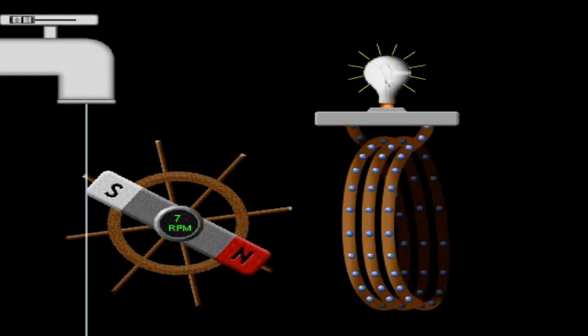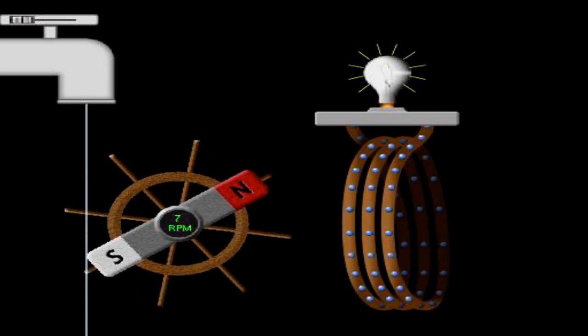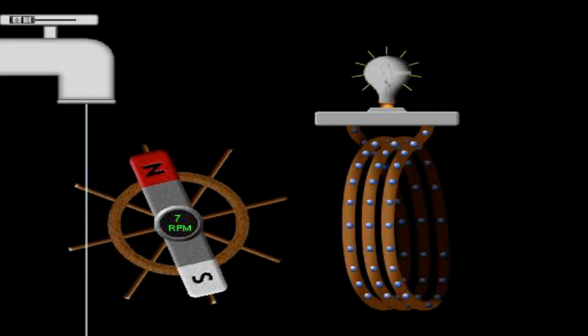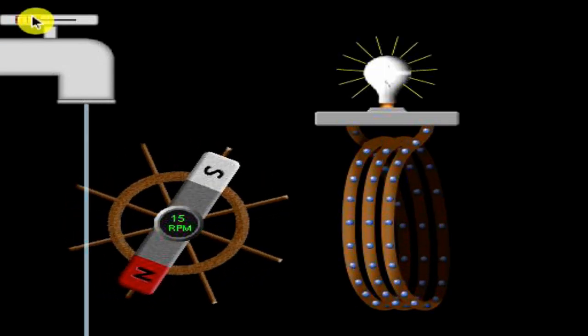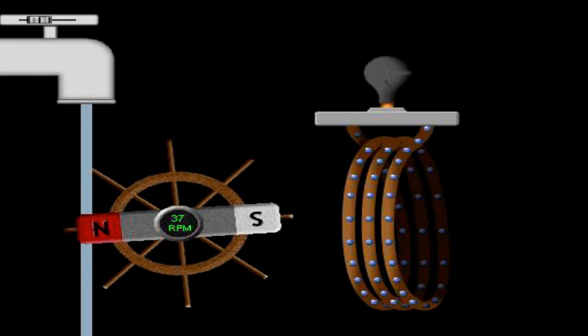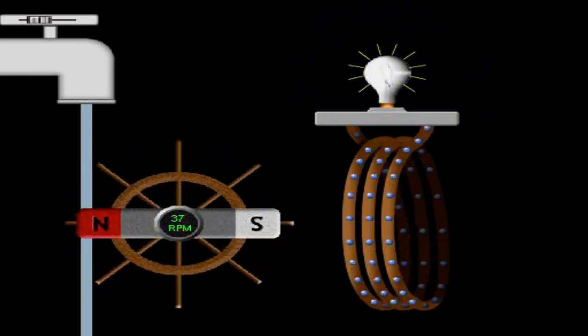This water wheel demonstrates how a simple generator might work. This would be a hydroelectric plant perhaps. The faster the wheel turns, the greater the amount of current generated.